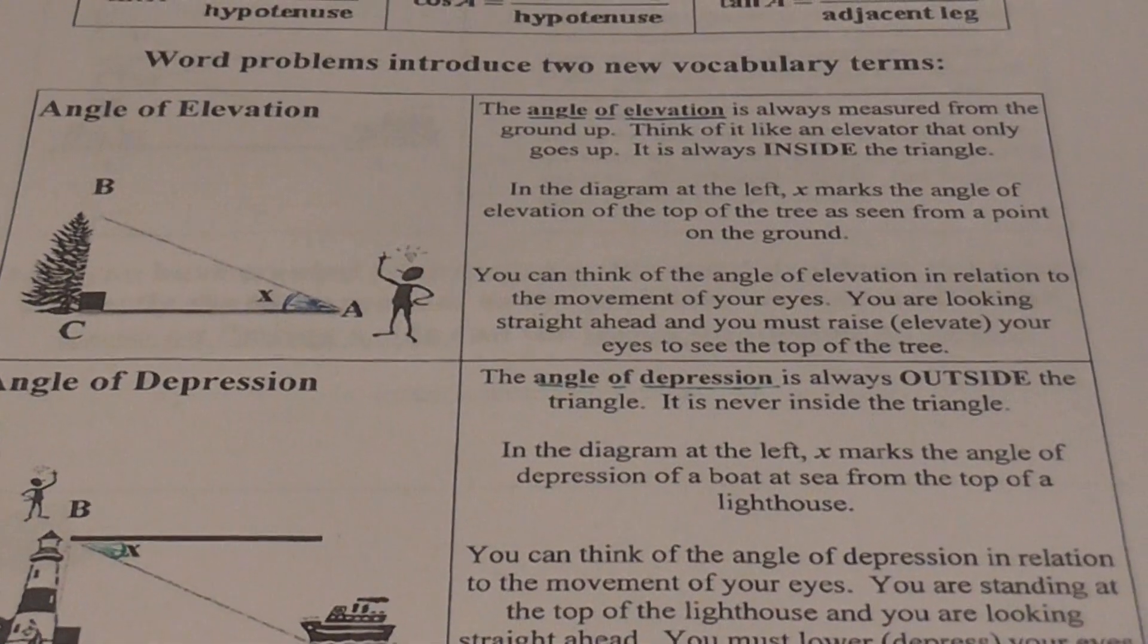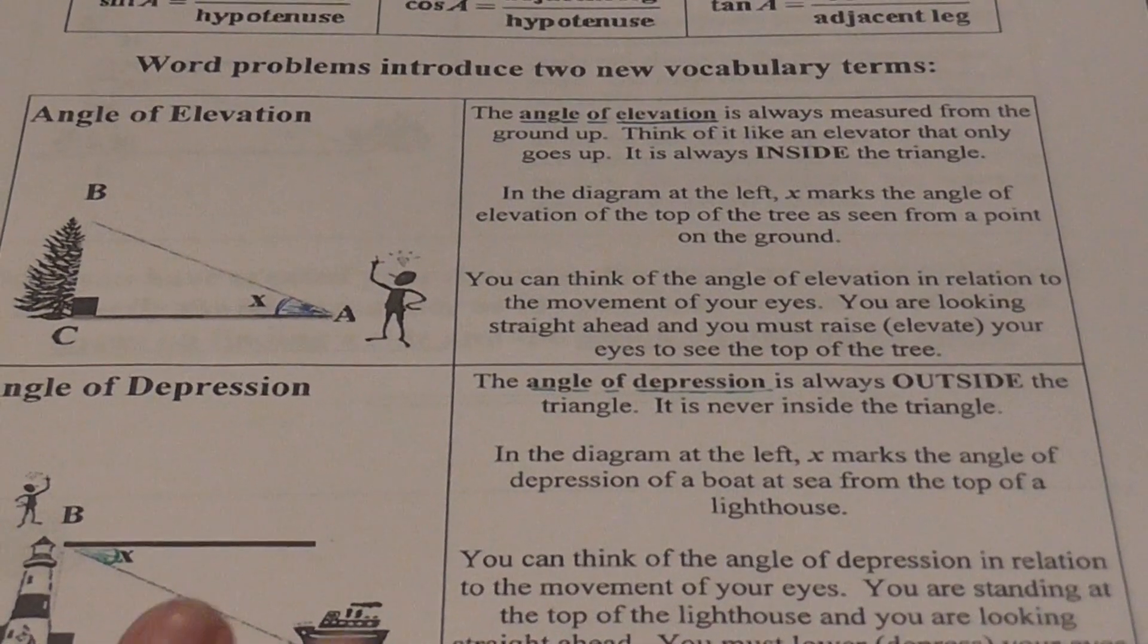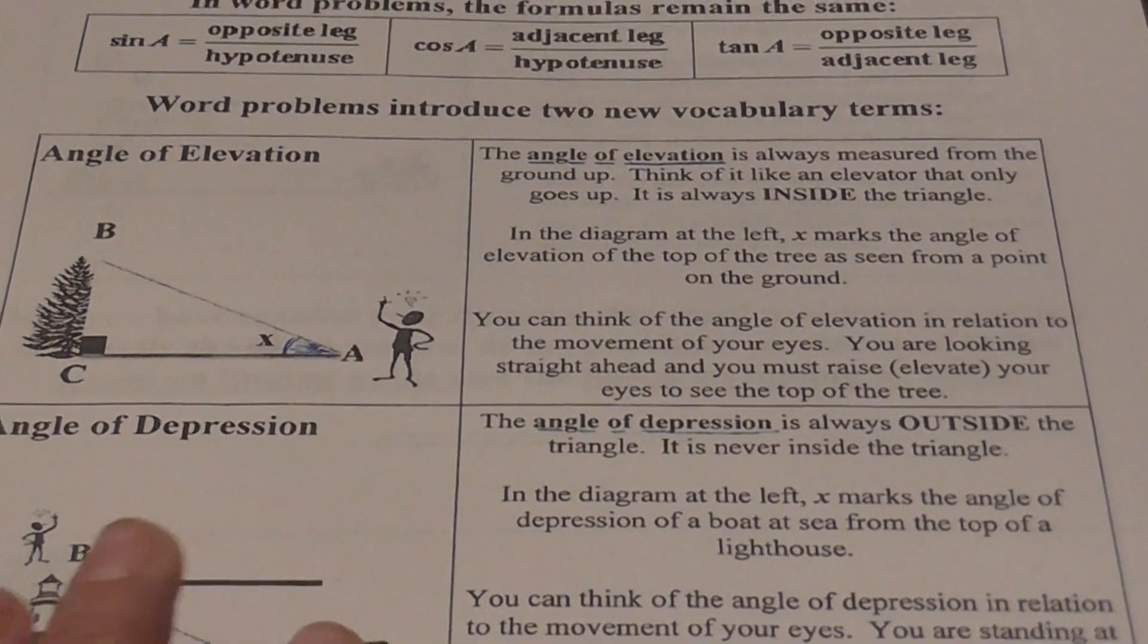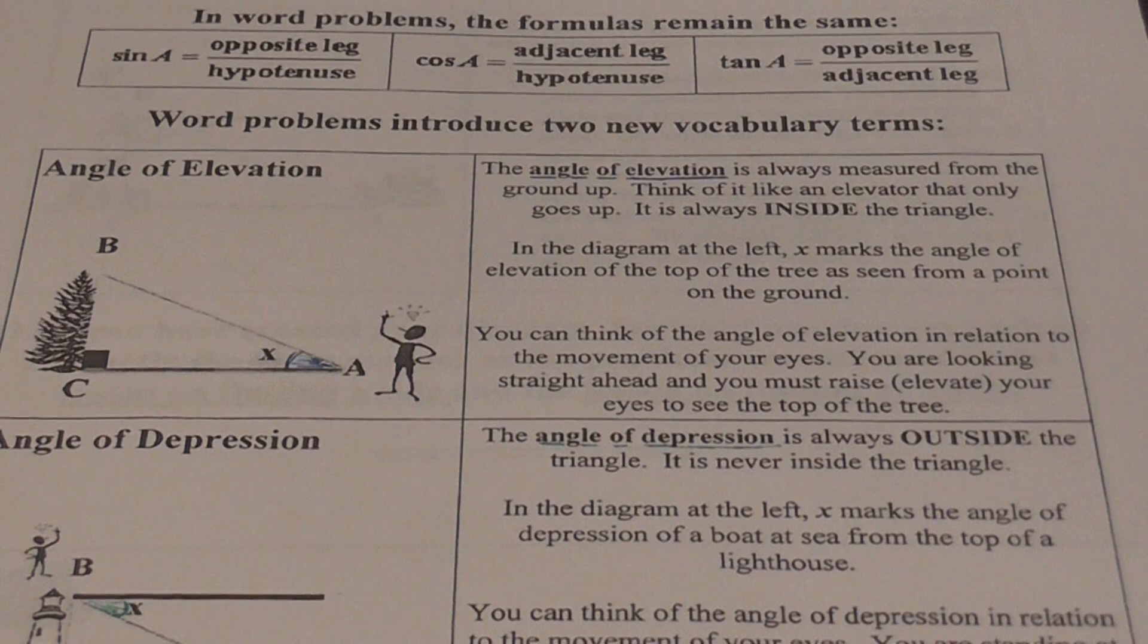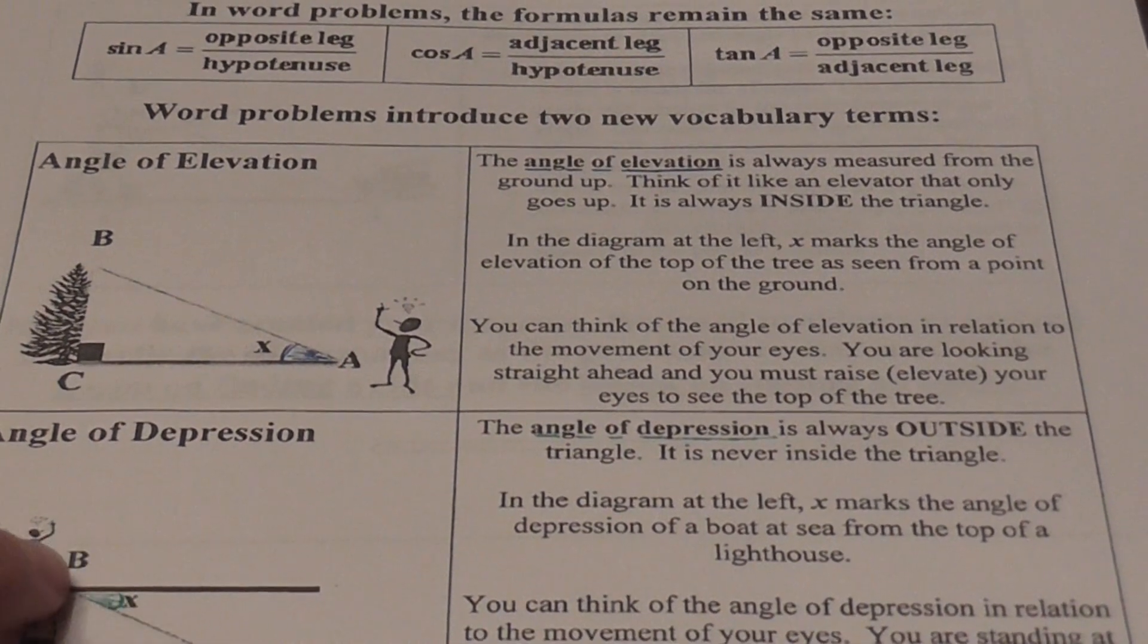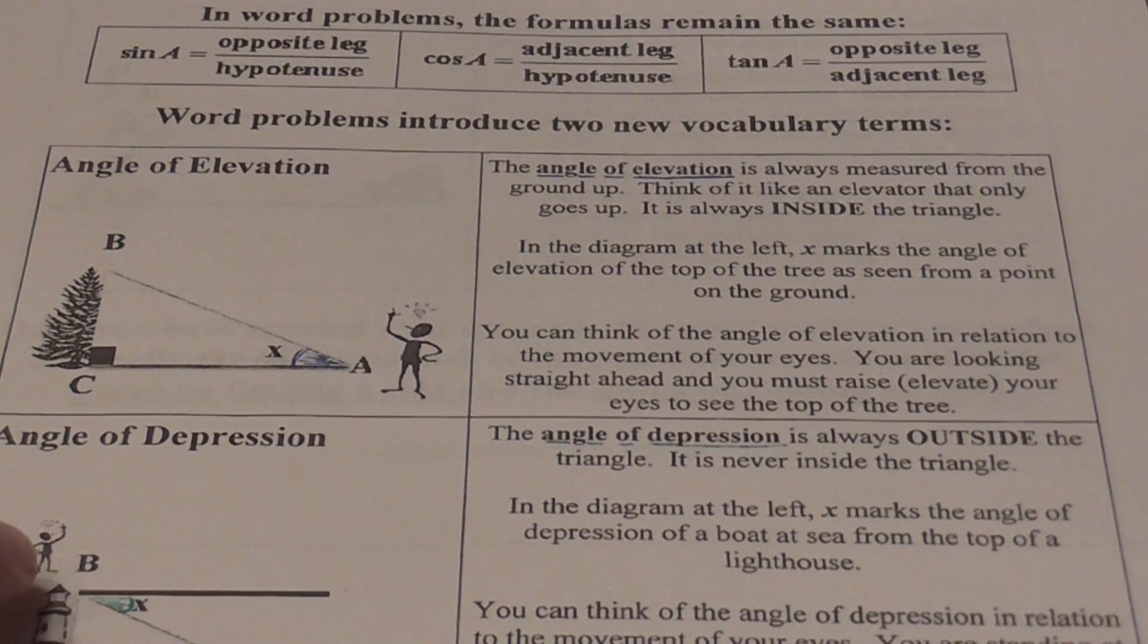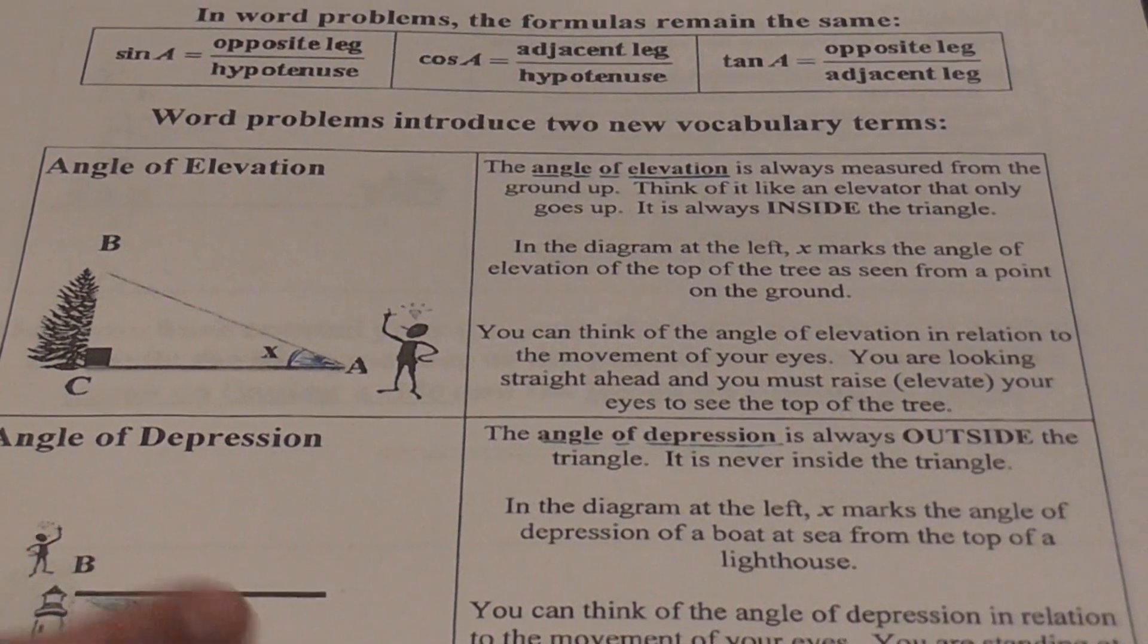Another one is the angle of depression. Okay, angle of depression is always outside the triangle that you draw. It's never inside the triangle. In the diagram here, what you're going to see is that this X now marks your angle of depression. I've colored it in green. So from the top of a lighthouse to a boat.